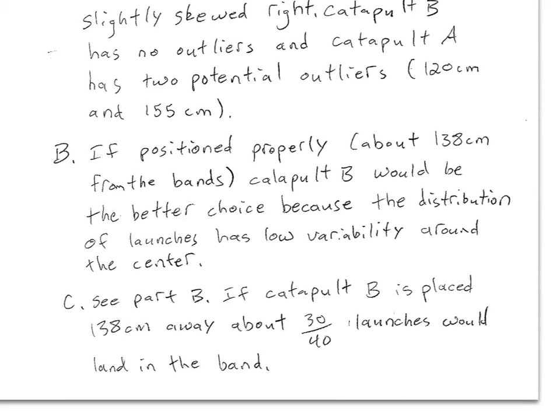So now we're saying, picking the catapult that we would choose to get more launches in the band, catapult B, because we want consistency from the catapult. It has much less variability. It looks like a much smaller standard deviation, much less spread in the distribution than catapult A. And then I'm given that answer in C that I already said before on the other page, that we should place it about 138 centimeters away.